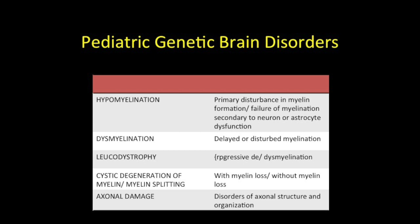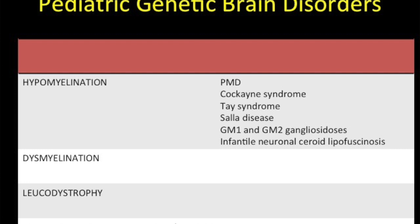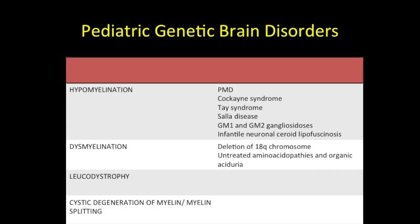Specific subtypes are as follows: hypomyelination is associated with Pelizaeus-Merzbacher disease, Cockayne syndrome, Tay-Sachs disease, Salla disease, GM1 and GM2 gangliosidosis, and infantile neuronal ceroid lipofuscinosis. Dysmyelination is seen in most of the aminoacidopathies and organic acidurias, and is also seen with deletion of chromosome 18q.